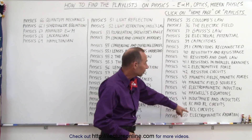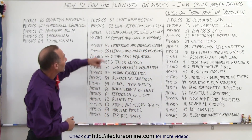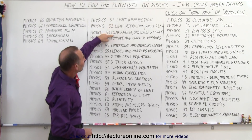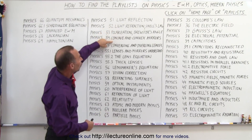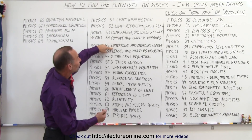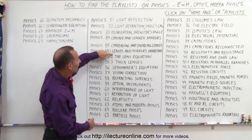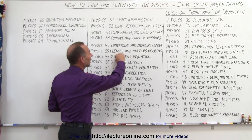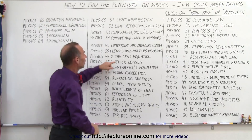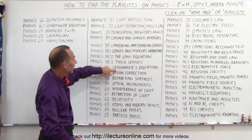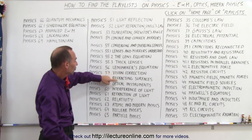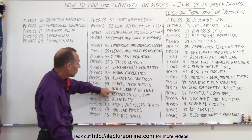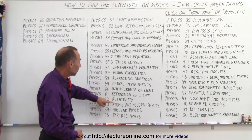Then we start with electromagnetic radiation, moving on to light and optics: light reflection, light refraction and Snell's law, polarization including Brewster's law, concave and convex mirrors, converging and diverging lenses, lenses and mirrors understood — an additional set of videos that help us understand how lenses work — the lens equation, thick lenses, lens makers equation, vision correction, refraction surfaces, and optical instruments.